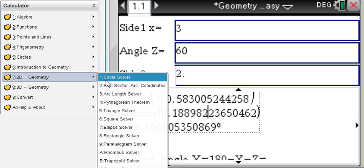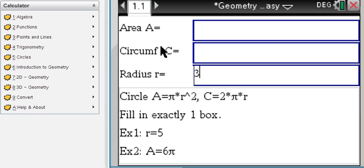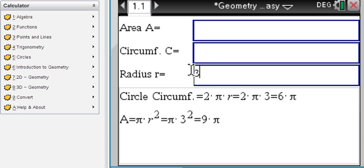Okay, let's look at the geometry circle solver: area, circumference, radius. You enter exactly one box, say you know the radius, you find the other two, area and circumference.